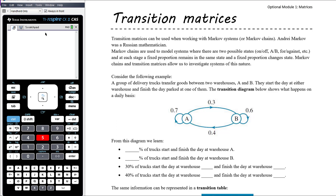Markov chains are used to model systems where there are two possible states. Depending on the problem, that might be things like on or off, A or B, for or against, yes or no, heads or tails — whatever it might be.